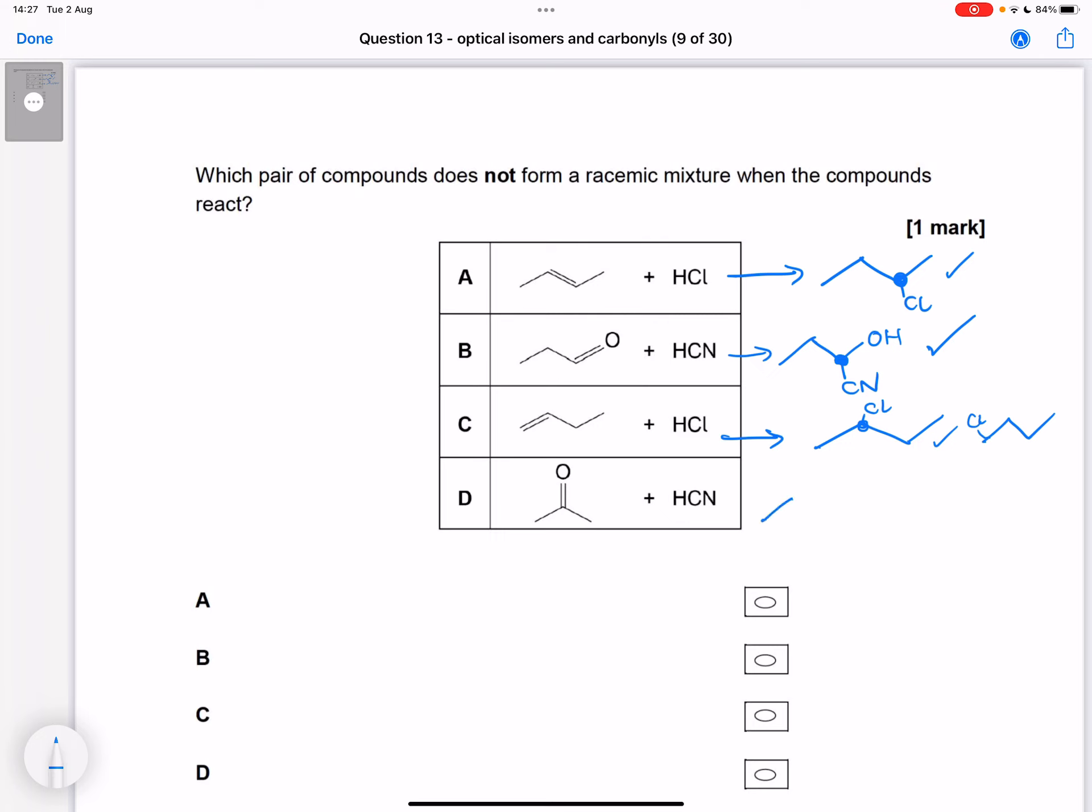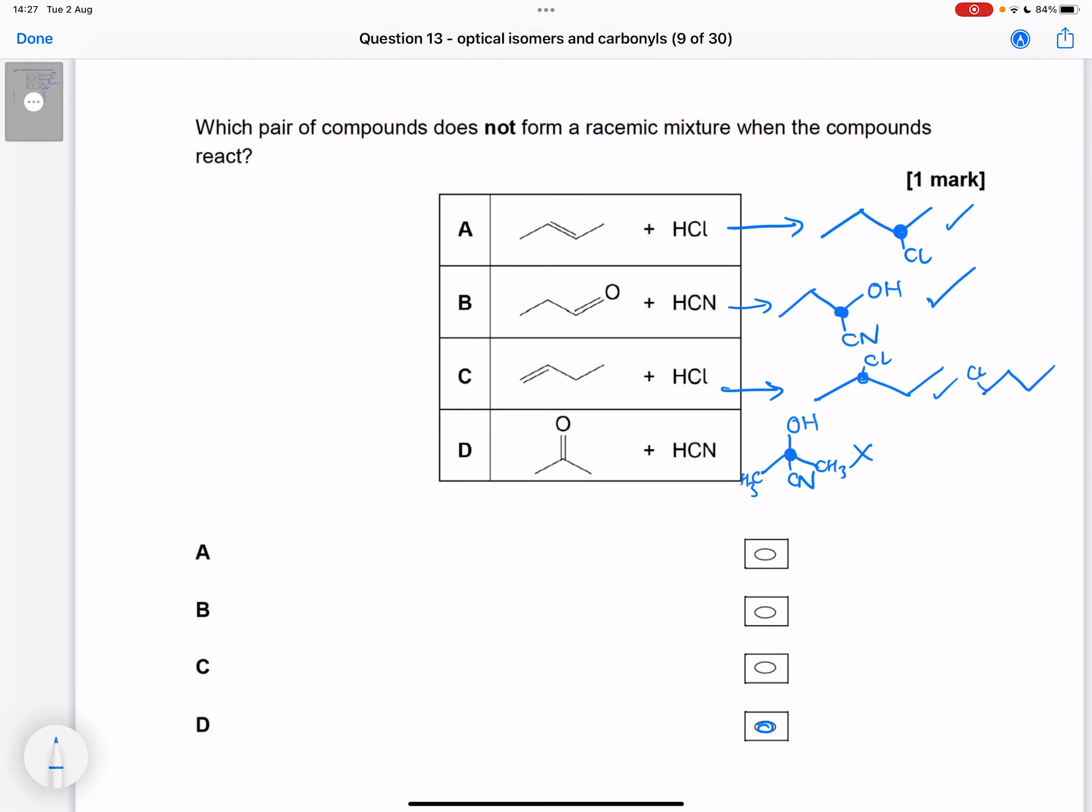D must be the answer, but let's just double check. We've got nucleophilic addition across the carbonyl bond. And here's what might look like it's going to be a chiral carbon, but because these are both two CH3s, then this does not have a chiral carbon, therefore does not form a racemic mixture.